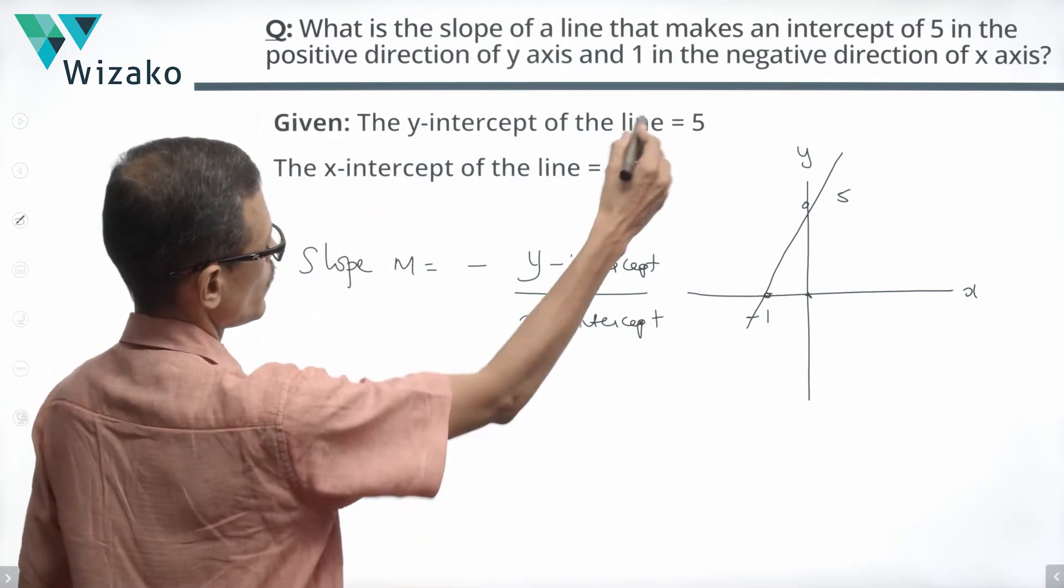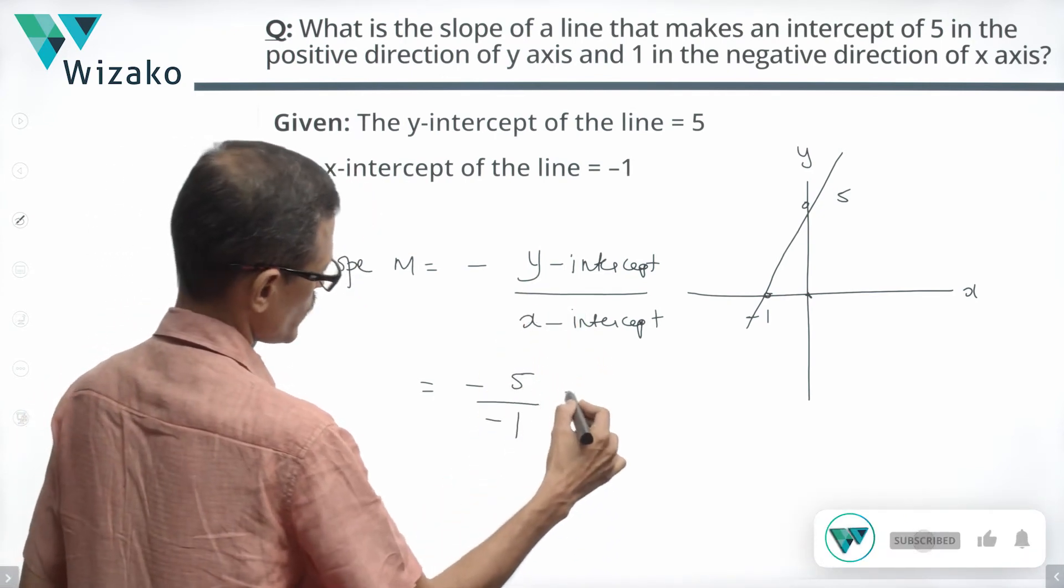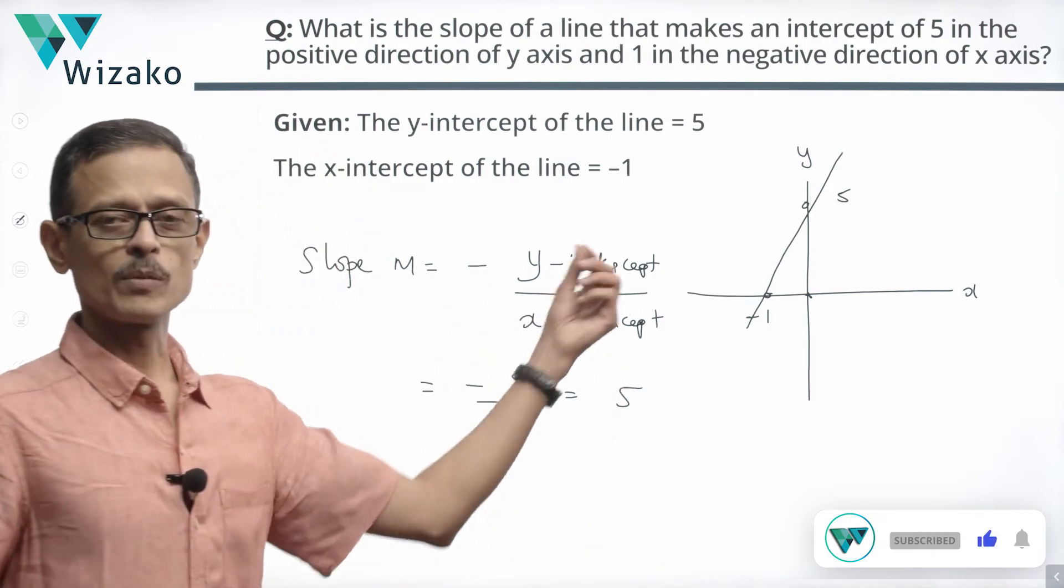So slope is equal to minus of the y-intercept is 5 divided by the x-intercept is minus 1. Minus 5 upon minus 1 is equal to 5. 5 is the slope of this line segment.